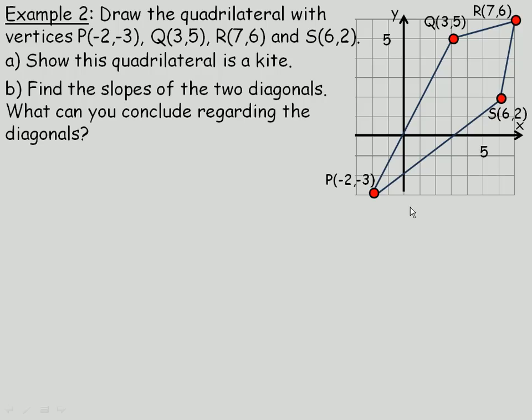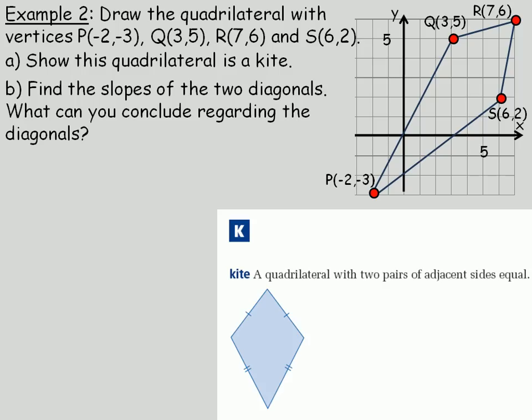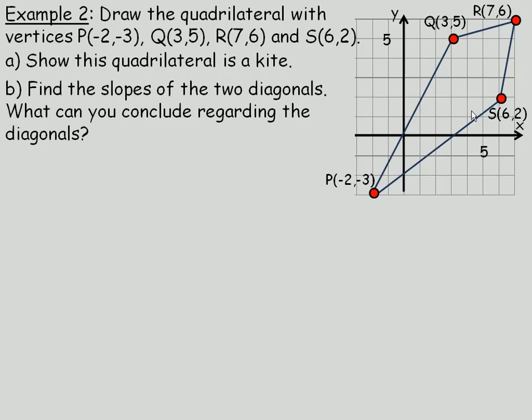Now we are asked in part A to show that this quadrilateral is a kite. If you flip to the glossary in your textbook, this is the definition of a kite. It is a quadrilateral with two pairs of adjacent sides equal. So these two sides are equal and these two sides are equal. So to show it is a kite, we are going to show that PQ and PS are equal in length. And also that QR and SR are also equal in length.